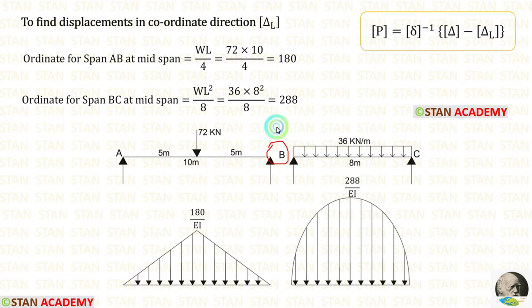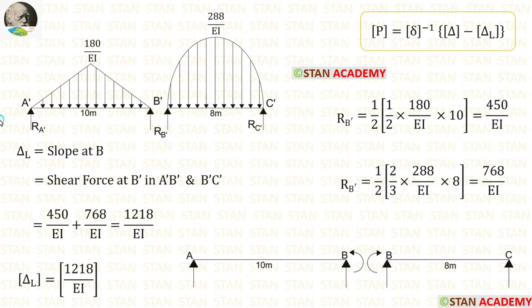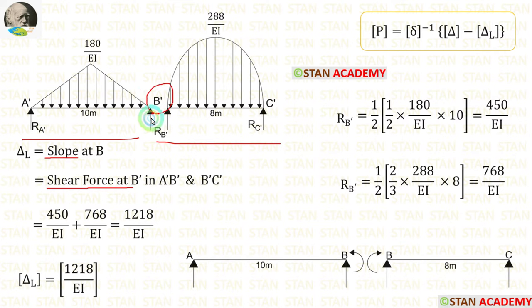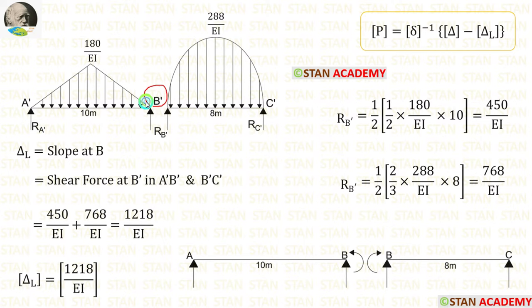In the conjugate beams, slope is the shear force and deflection is the moment. Now we have to calculate the slope, so we have to find the shear force in the conjugate beams at point B'. We know that the shear force is the summation of the forces on either the left or right side. But at point B', we are only having the reactions and no other forces. So if we want to calculate the shear force at B', we have to calculate the reactions.